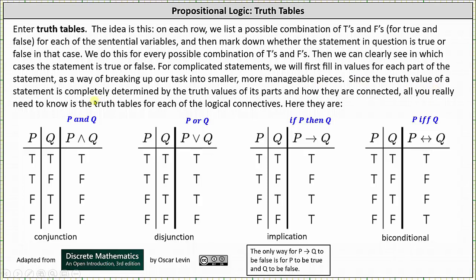Since the truth value of a statement is completely determined by the truth values of its parts and how they are connected, all we really need to know is the truth tables for each of the logical connectives. Notice the first two columns of all the truth tables are the same — they list all the possible combinations of T's and F's for p and q: true-true, true-false, false-true, and false-false.